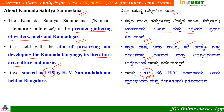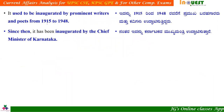In 1950, the first Akhila Bharata Kannada Sahitya Sammelana was held. H.V. Nanjundaiah was the first president. It was held in Bengaluru. In 1998, the conference was held, and H.V. Nanjundaiah is recognized as the first president of this conference.